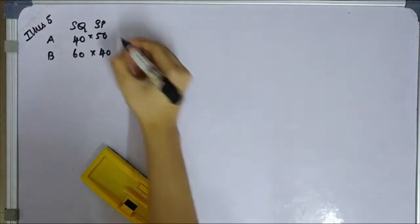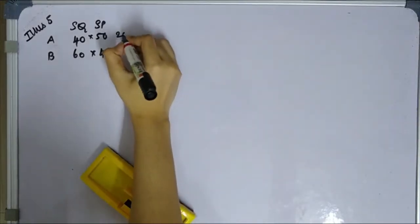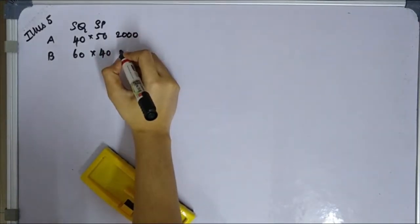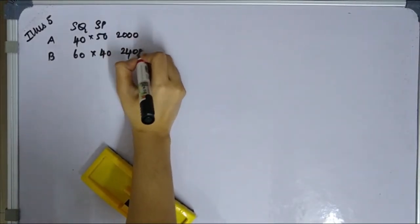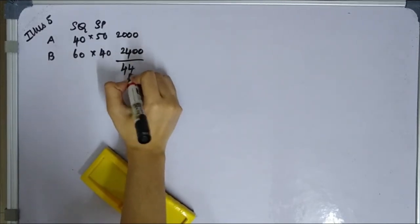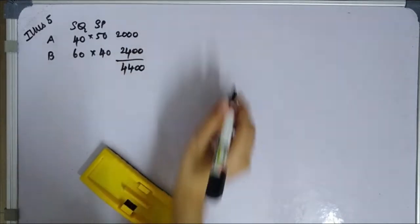I get 2,000 for material A. I get 2,400 for material B. Total SQ×SP is 4,400.